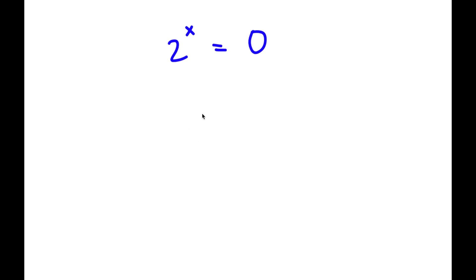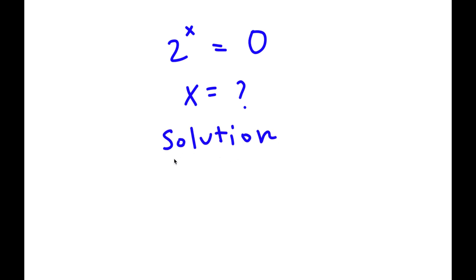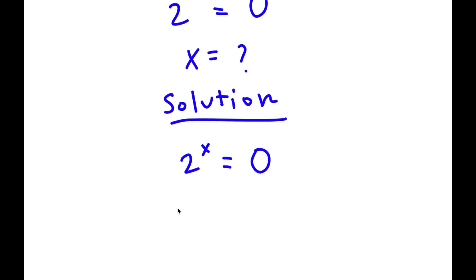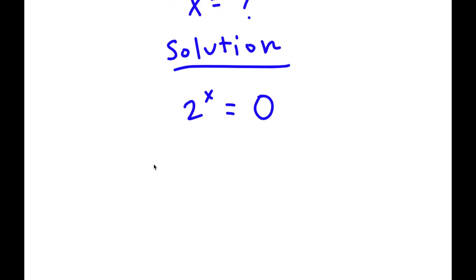So in this problem, I have 2 to the power of x is equal to 0, and I'm going to find the value of x. For my solution, I start with 2 to the power of x equals 0. What I'm going to do is take the log on both sides, so now I have log of 2 to the power of x is equal to log 0.